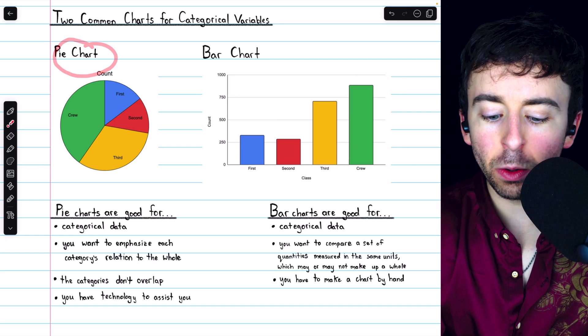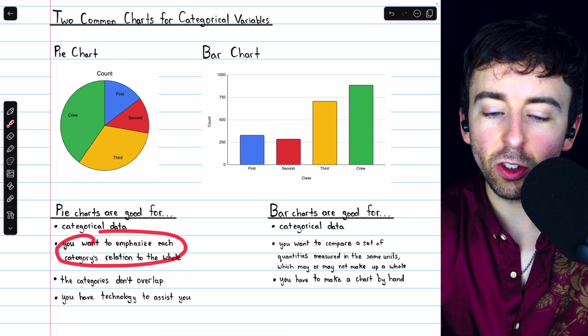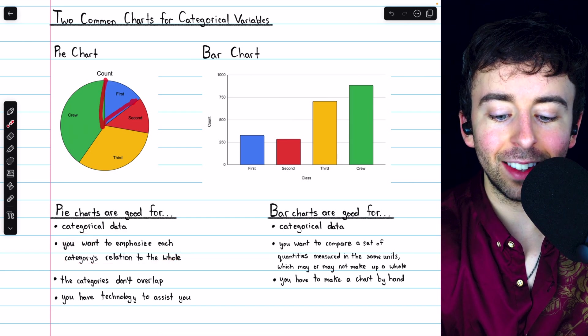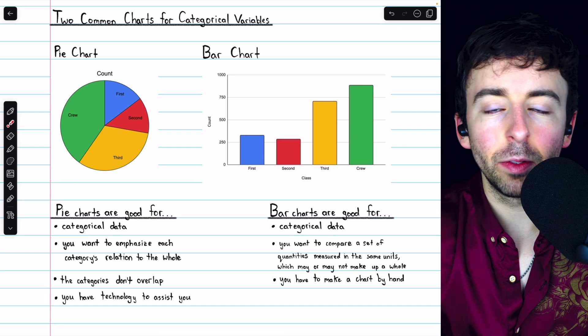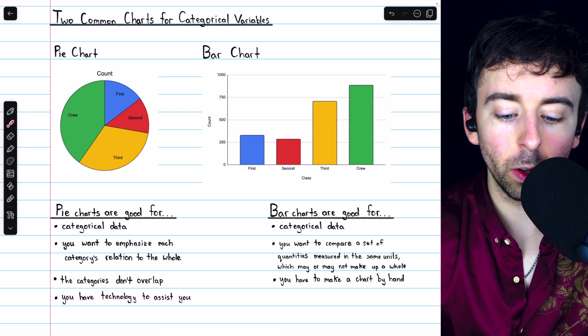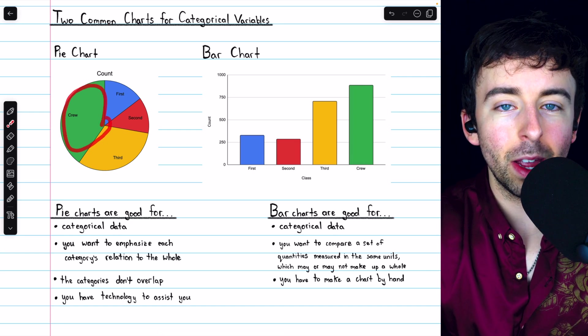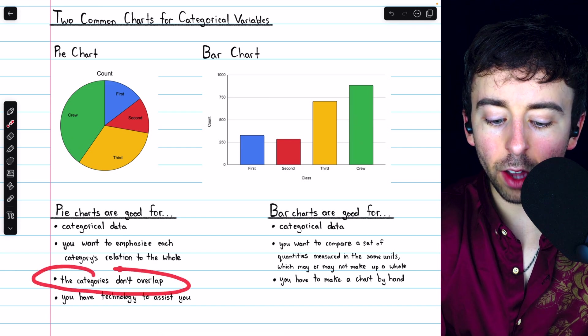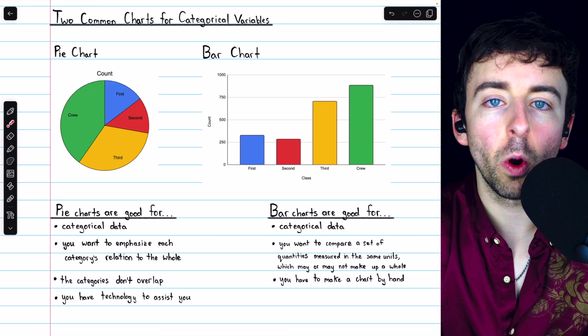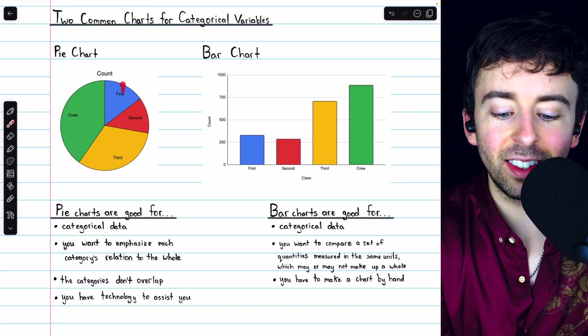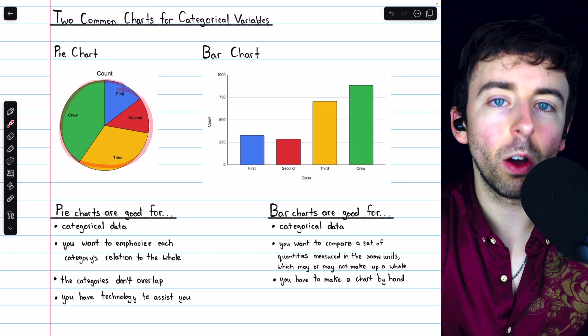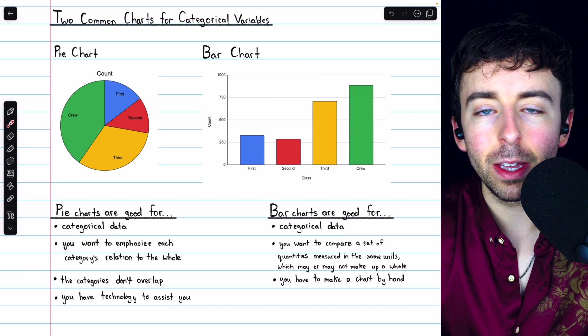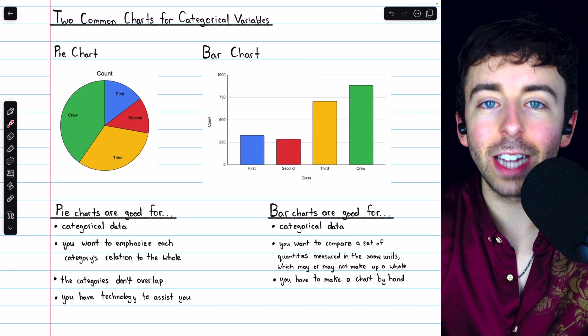For a pie chart, it's particularly good when you want to emphasize each category's relation to the whole. We can immediately look at first class here and see it makes up a relatively small slice of the whole, whereas the crew makes up a pretty large percentage of the whole. For a pie chart, it's also important that the categories don't overlap. Visually, you can see that everything adds to one whole, but if there's overlap in the categories, that would actually be misleading.